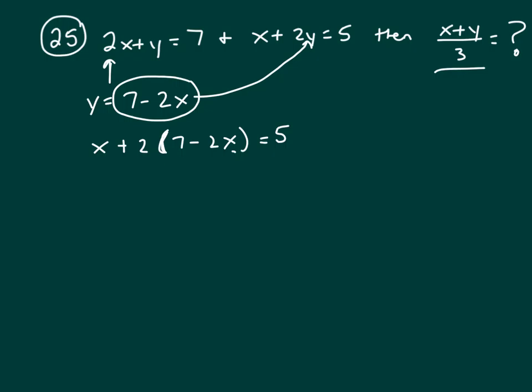Now let's multiply everything inside your parentheses by positive 2. That's x plus 14 minus 4x equals 5.